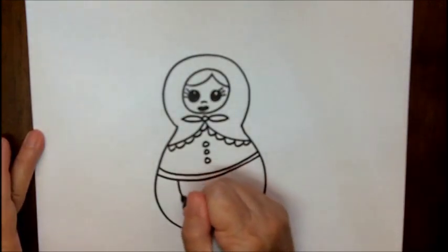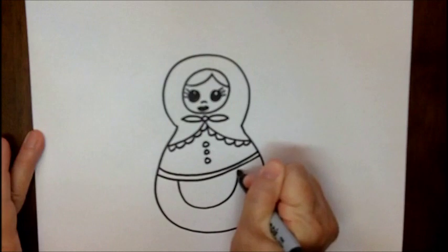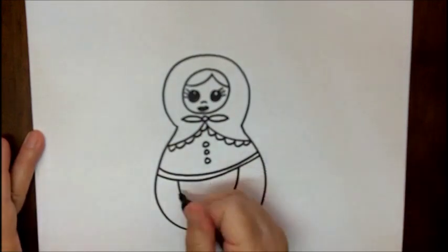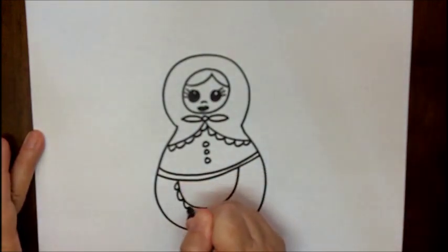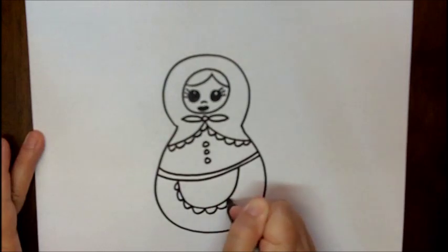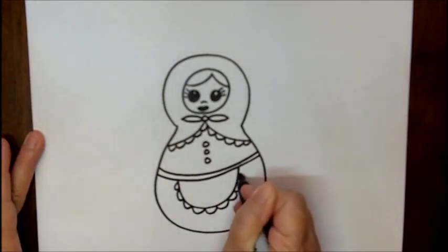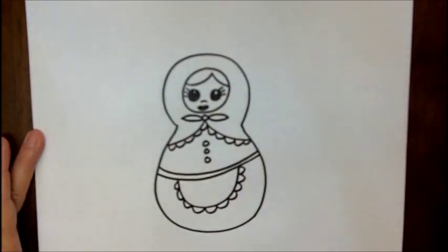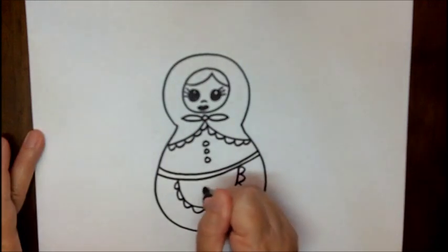Maybe give her a little apron. You can decorate that as well. So just use your imagination and whatever you think looks good. I always like to do daisies.